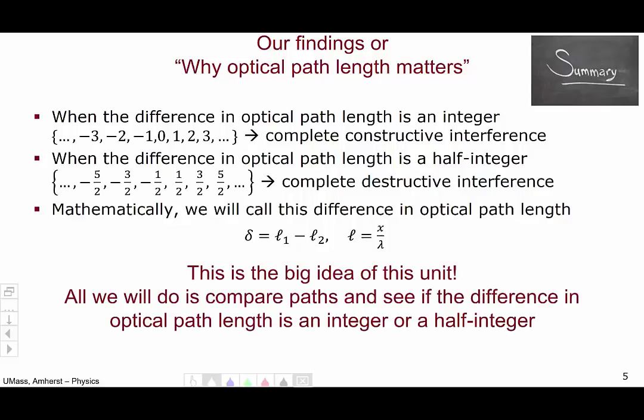This is the big idea of all of Unit 3. All we're going to be doing for the rest of the unit is comparing optical path lengths to see if the difference is an integer or half integer for a variety of different geometries and situations. I want to stress that this is essentially all we are going to be doing for the entirety of this unit, so you should keep this in mind.